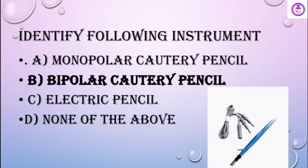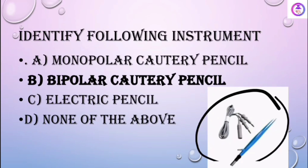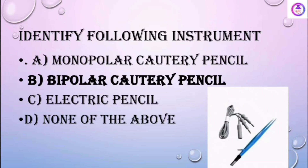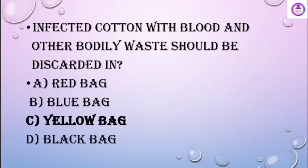Identify the following instrument. This instrument is a bipolar cautery pencil, which works on the principle that current passes through both tweezers. So this is a bipolar cautery pencil.